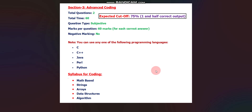You will have 60 minutes to solve the two coding questions. There is no individual timing for each question, so you can adjust your time accordingly — for example, you could take 40 minutes for the first question and 20 minutes for the second. Question type is subjective. There is no negative marking, and for each fully correct question you will get 60 marks. The expected cutoff is 75%.